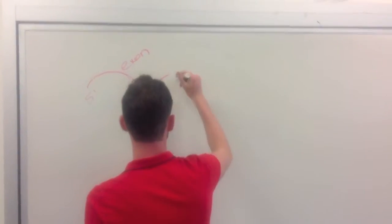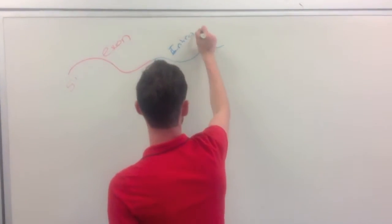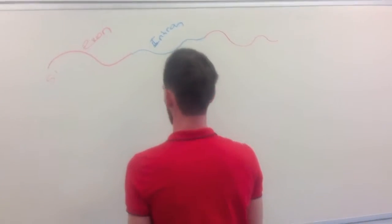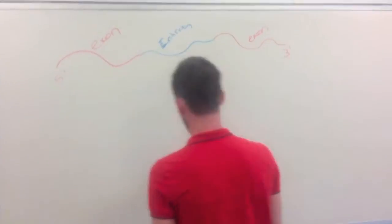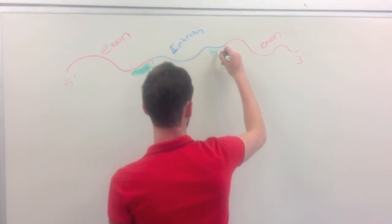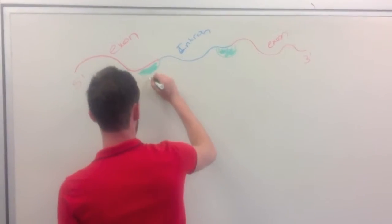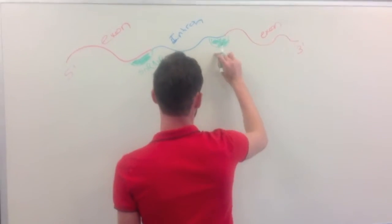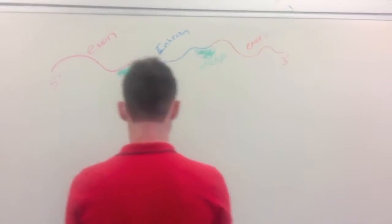Before translation occurs, the mRNA transcript needs to be processed. The first way for the transcript to be modified is through RNA splicing. Introns are removed so that the protein can be functional. SNRPs are small nuclear ribonucleoprotein particles that bind short stretches of DNA at the 5 prime and 3 prime exon-intron boundary.